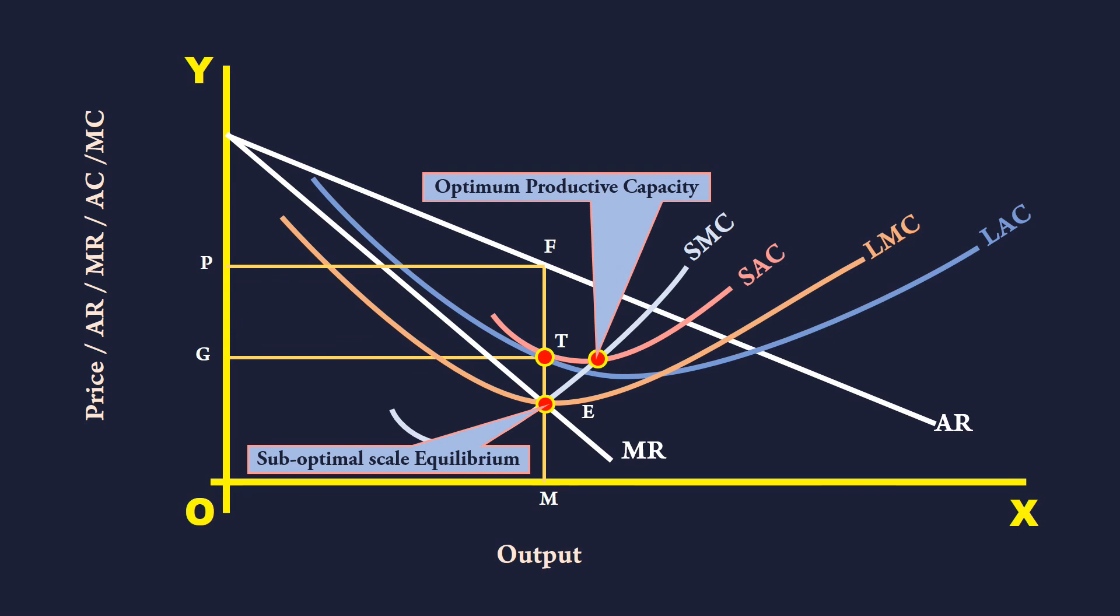Again, the firm is functioning on the falling side of the LAC. It is unable to reap the full benefit of the economies of scale. Hence, the firm is said to be in sub-optimal scale equilibrium.